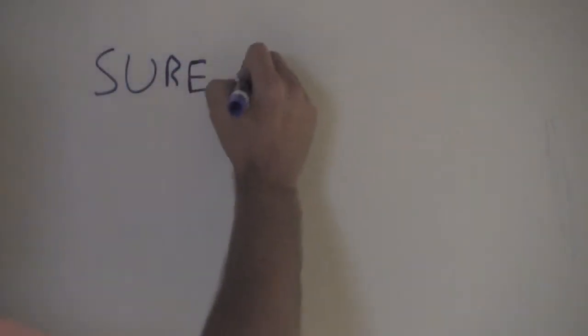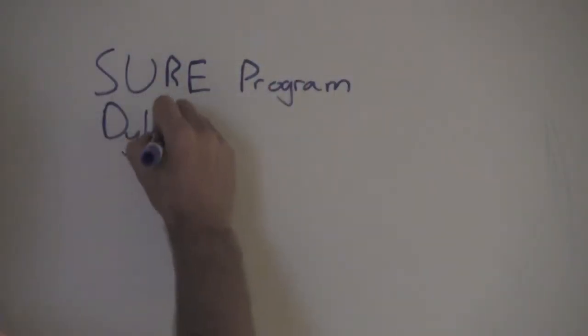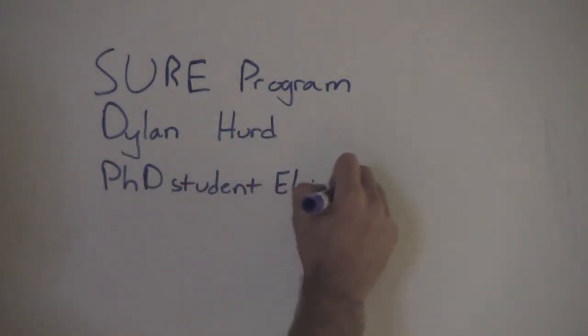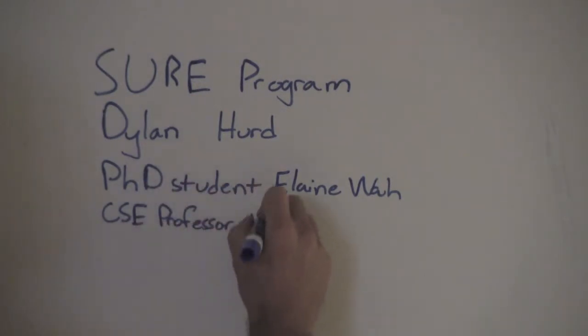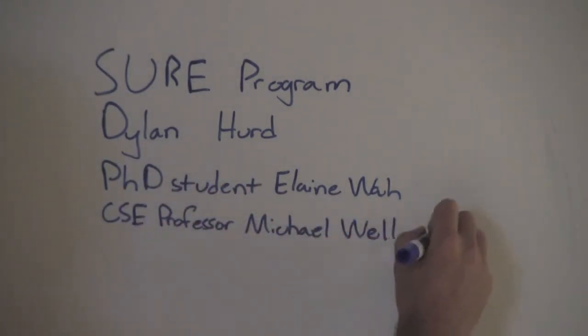Hi, my name is Dylan Hurd, and I spent the summer working in the SURE program at the University of Michigan with Ph.D. student Elaine Waugh and computer science and engineering professor Michael Wellman, studying the effects of latency arbitrage and market fragmentation. If you'd like to learn more about Elaine's work, click here.